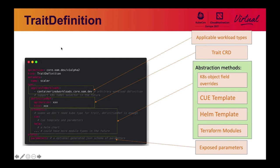Now let's take a deeper look into the trait definition object. It refers to a CRD that provides the operations capability. It tells the workload types that it can apply to. It also provides a couple of templating methods for platform teams to choose — you can use Helm, CUE, or Terraform to write the modules. It also writes back useful information in status, such as the JSON schema of the parameters.